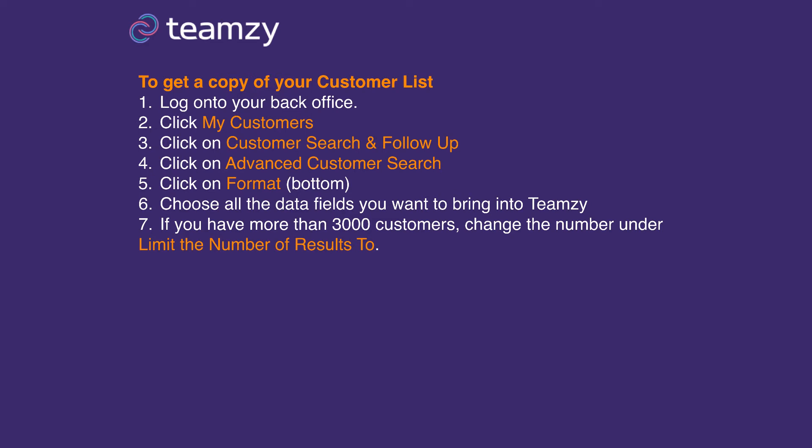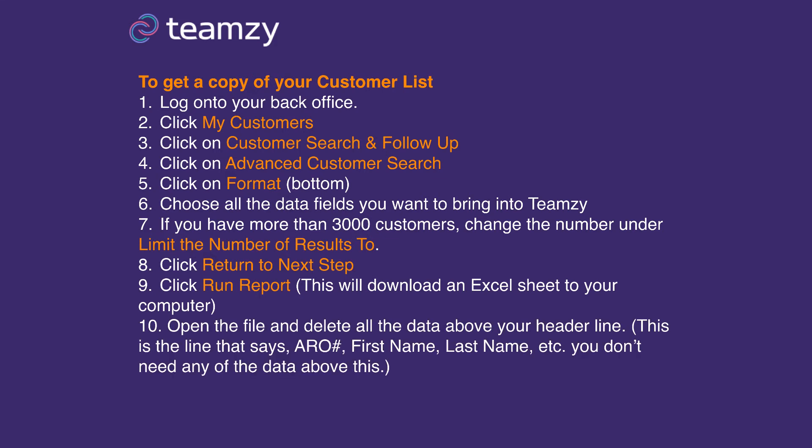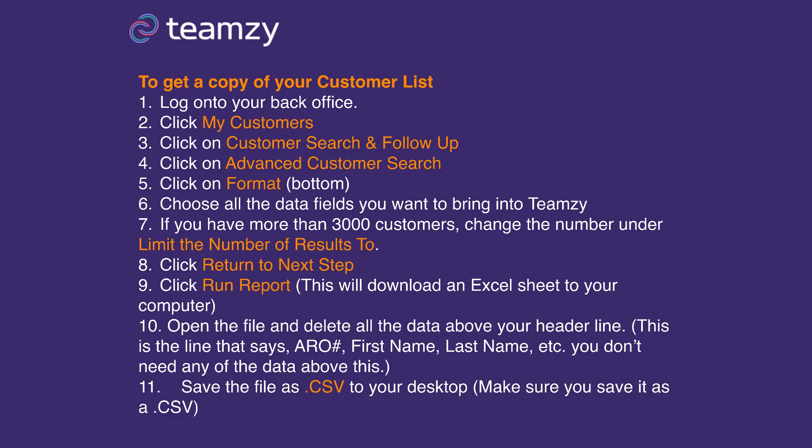If you have more than 3,000 customers — this is for you guys with big teams — change the number under 'Limit the Number of Results to,' because it's going to limit your export to 3,000 people. If you have less than 3,000, you don't have to do anything with this. Next, click Return to Next Step, then click Run Report at the bottom left. This will download an Excel sheet to your computer. Open that file, delete all the random data above the header line, and save it as a CSV to your desktop. Now both files are ready to import into Teamsy.